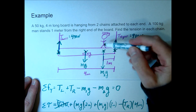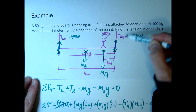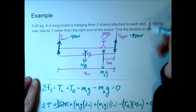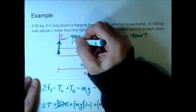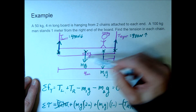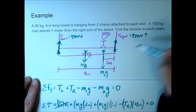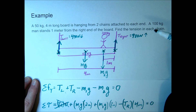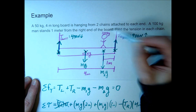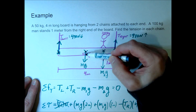Conceptually: if the person moves further to the right, TR would increase and TL would decrease, but their sum always equals the total weight of 1470 N. Conversely, moving left increases TL and decreases TR. If he stands right in the center, both tensions would be equal — perfectly balanced. This makes intuitive sense and confirms our solution.